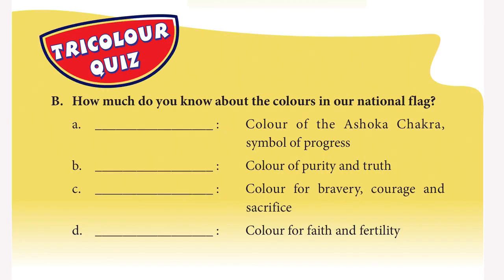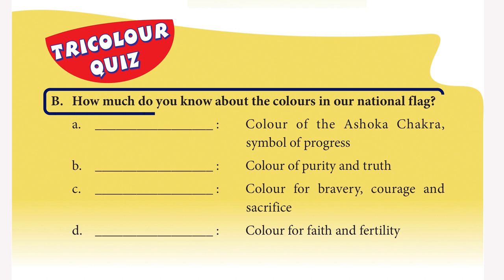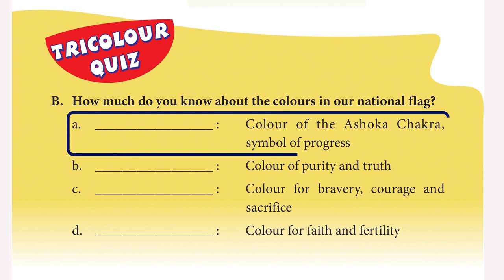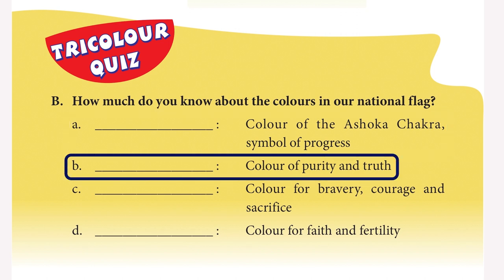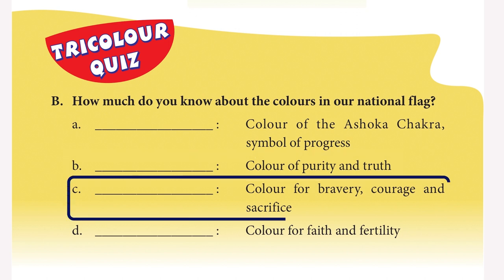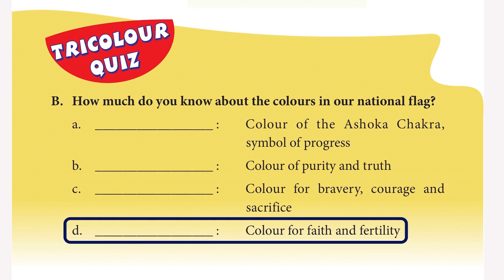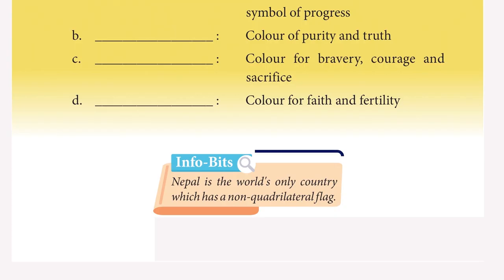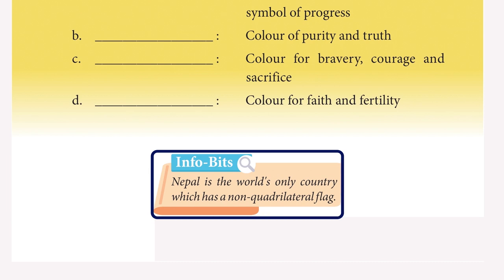Colour Quiz: How much do you know about the colours in our national flag? Colour of Ashok Chakra, symbol of progress — Navy Blue. Colour of purity and truth — White. Colour for bravery, courage and sacrifice — Saffron. Colour for faith and fertility — Green. Info Bits: Nepal is the world's only country which has a non-quadrilateral flag.